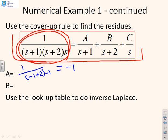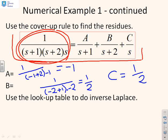If I do the B, I've got to cover up the (s + 2) term and set s equal to minus 2. I'm going to get 1 over (-2 + 1) into (-2), which is going to give me a half. And finally, if I want to look at the C, I've got to cover up the s term and set s equal to 0, so I'll end up with a half. What have we got left here? We've got a half plus 0.5/(s + 2) minus 1/(s + 1). Then I can use the lookup table and inverse Laplace for the remainder of the steps.